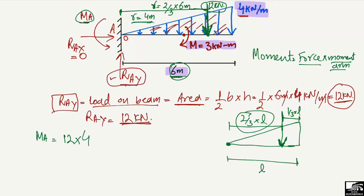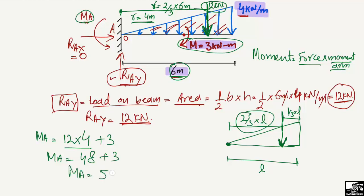So the moment arm is 4 meters. We also have the internal moment of 3 kilonewton-meters. Therefore, the total moment at point A is: 12 × 4 + 3 = 48 + 3 = 51 kilonewton-meters. The moment at point A is 51 kilonewton-meters.